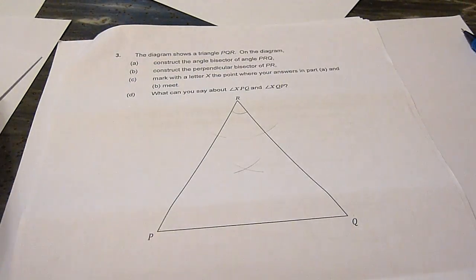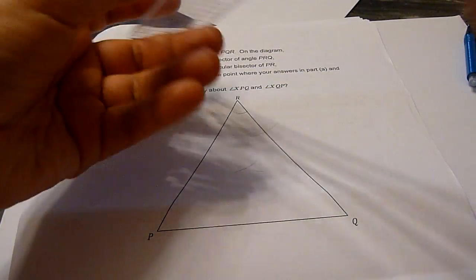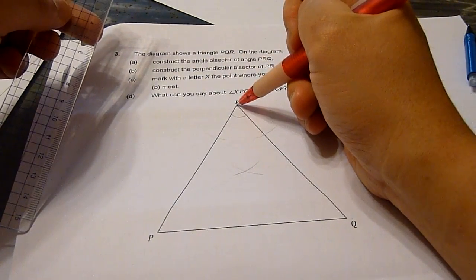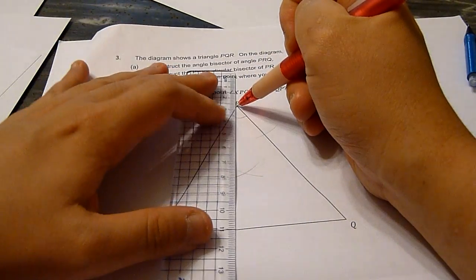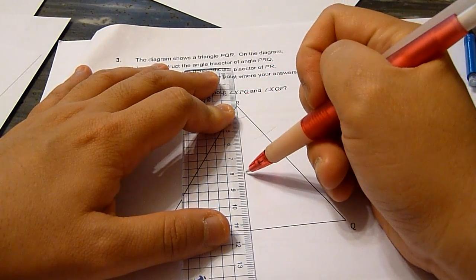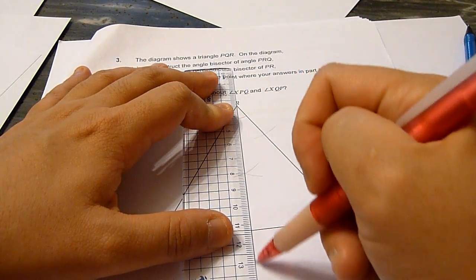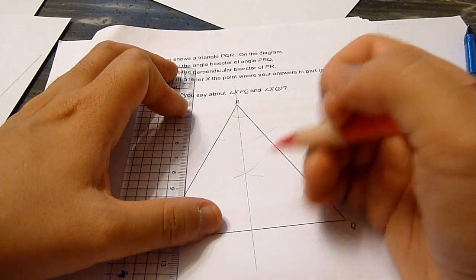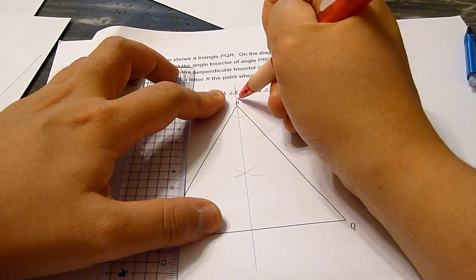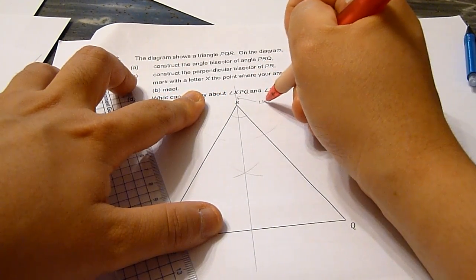Now we can join the tip R to the intersection of the two arcs. And this will be the angle bisector.